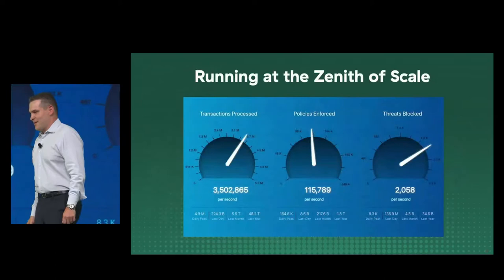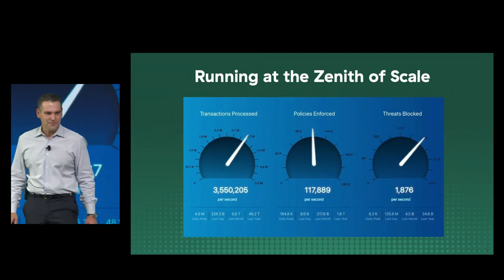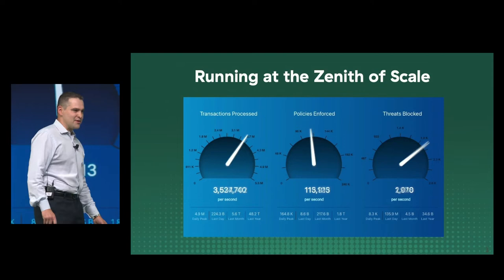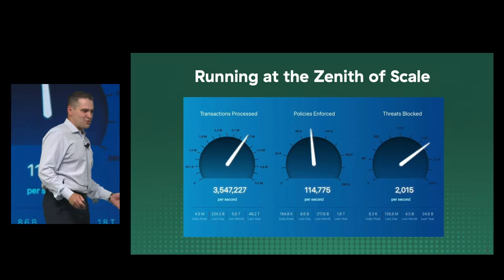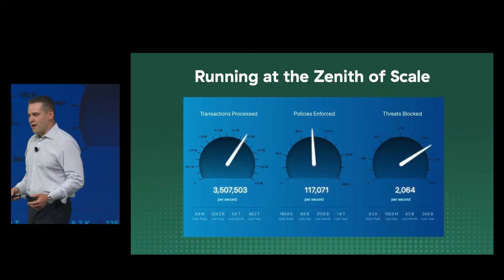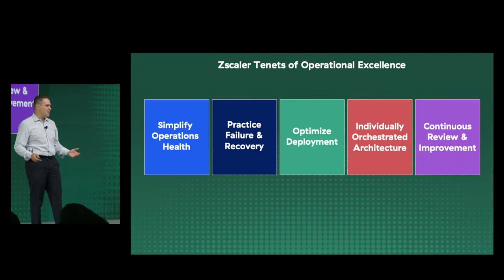Without further ado, this is what it means to run at the zenith of scale. At any given moment, we're processing millions and millions of transactions. We're securing and enforcing policies and stopping thousands of threats. But none of this matters unless the network is stable, unless the platform is working and everything is 100%. So before going more into scale, I do want to talk about our operational excellence and the tenants of that operational excellence, because they're very important.